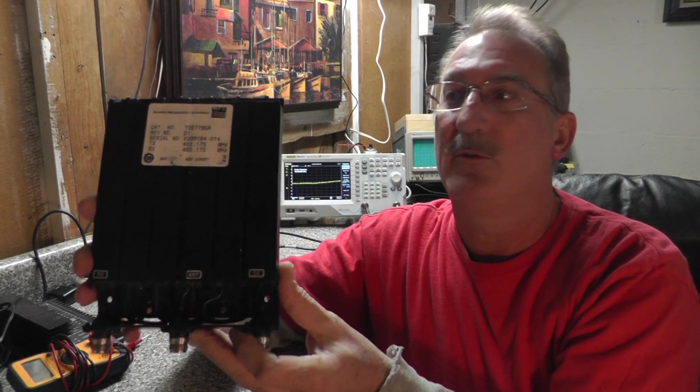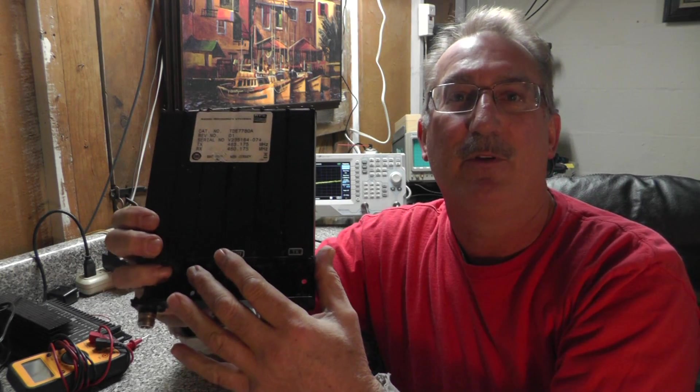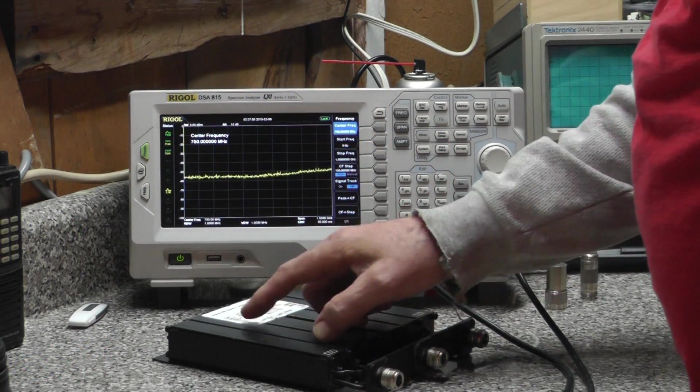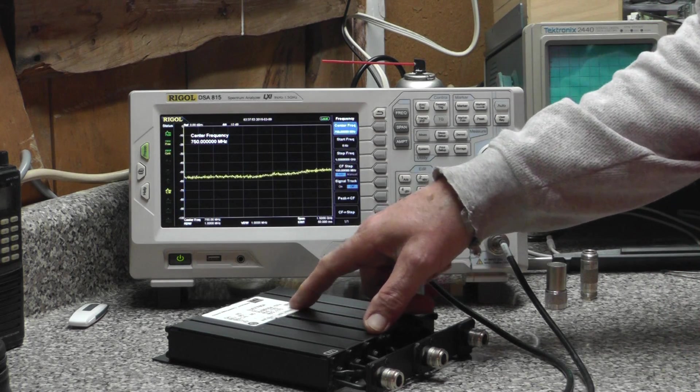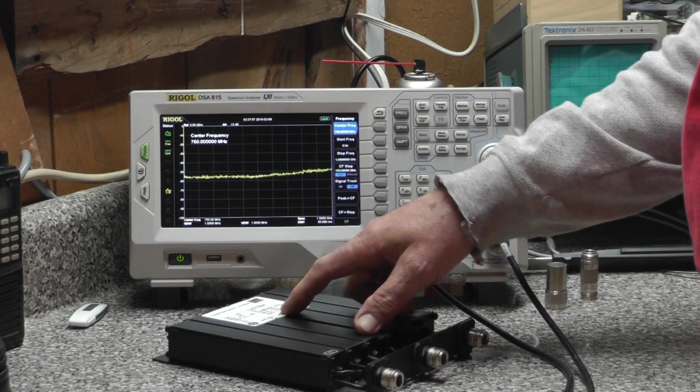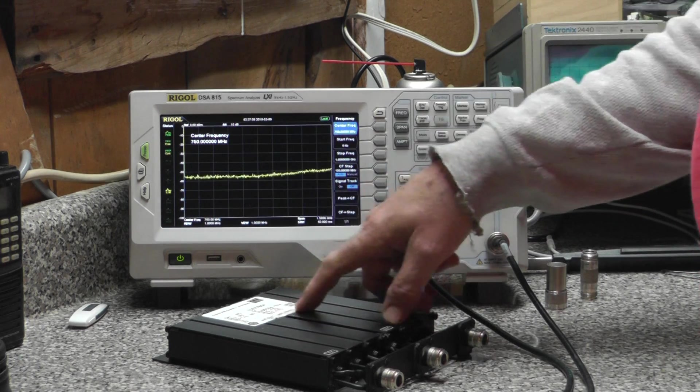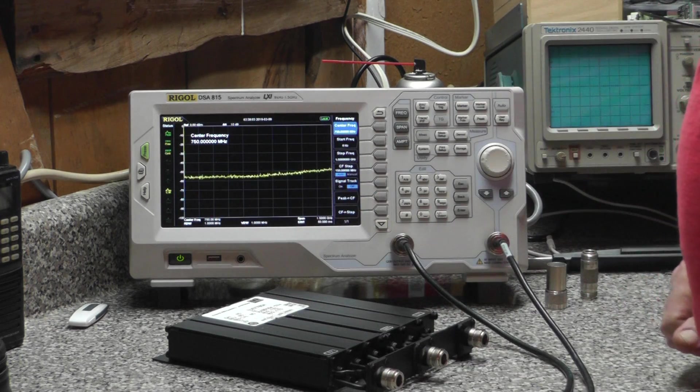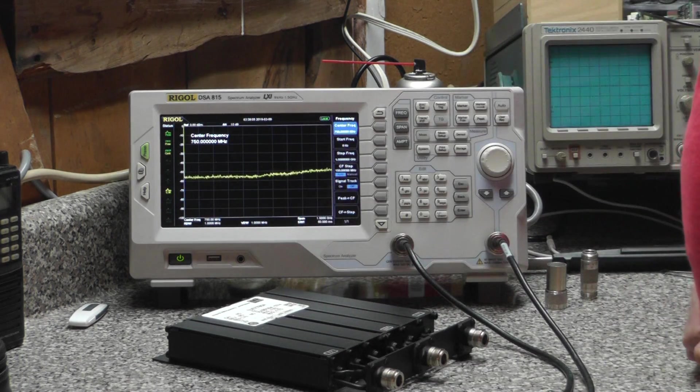These small duplexers are notch type filters. This particular unit has a transmit frequency of 465.175 megahertz and a receive frequency of 460.175 megahertz, 5 megahertz spread. Receive frequency is going to be the lower side and the transmit frequency the higher side.